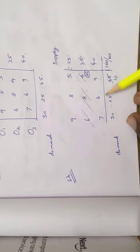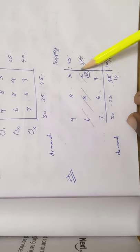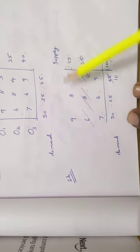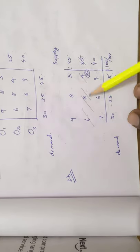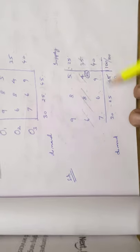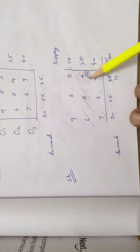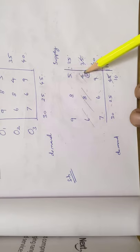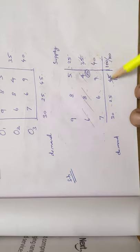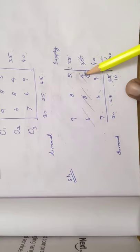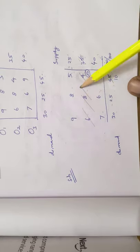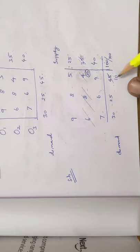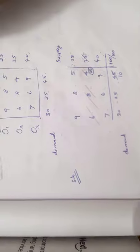Rewrite the problem. Cost values: 9, 8, 5, 6, 8, 4, 7, 6, 9. Supply: 25, 35, 40. Demand: 30, 25, 45. In the Least Cost Method, find the minimum cost in the entire table. The minimum is 4. Corresponding supply is 35 and demand is 45. Minimum is 35, so allocate 35 to cost 4. Cross out the row. Demand becomes 45 minus 35 equals 10.